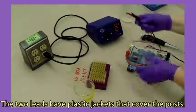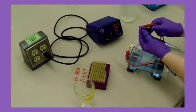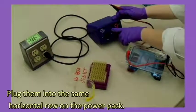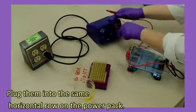The two leads have plastic jackets that cover the posts. They slide back automatically as you plug them in. Plug them into the same horizontal row on the power pack.